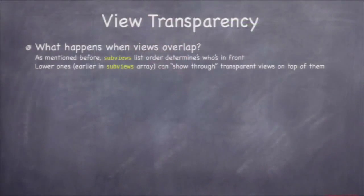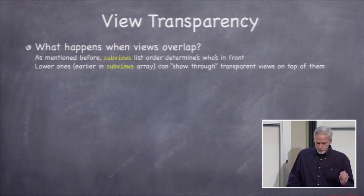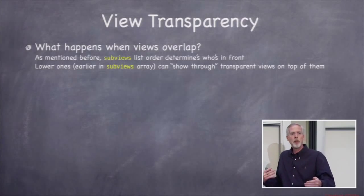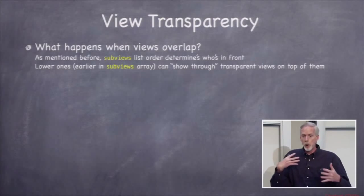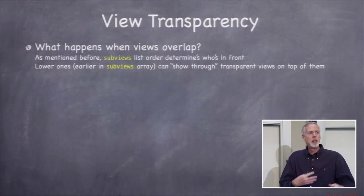When transparent views overlap, they show through to each other. The order in which you add subviews matters. Every view has an NSArray property called subviews — the order is back to front: index zero is at the back, the last element is at the front. Things can overlap and show through, but if there's an opaque view in the middle, it blocks everything behind it.